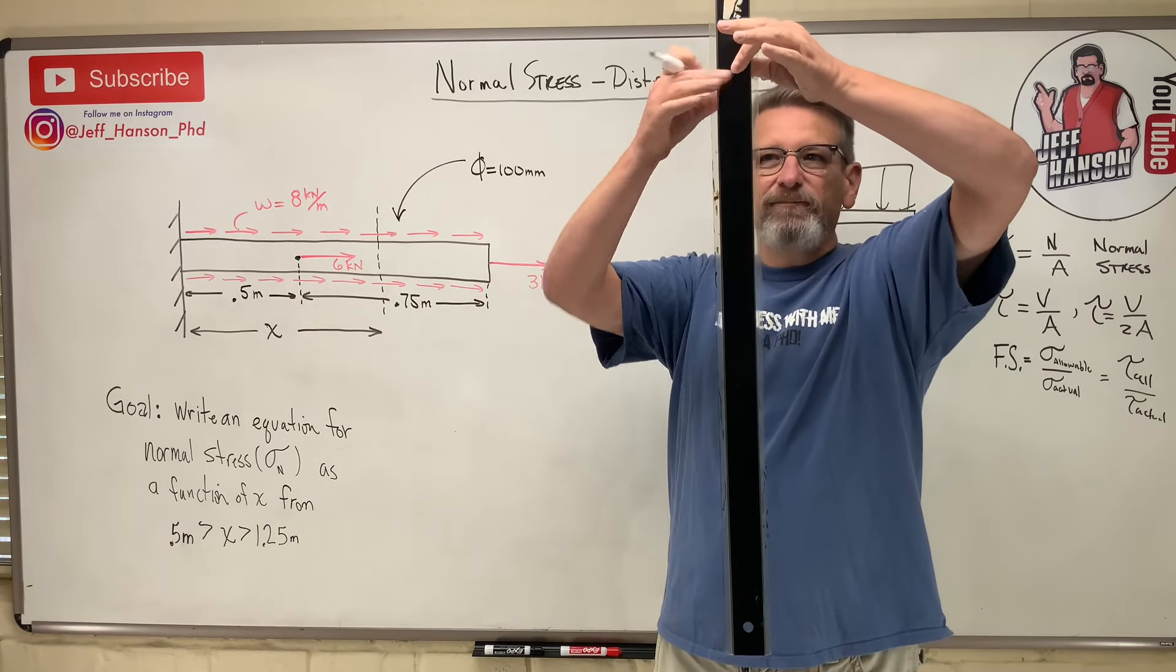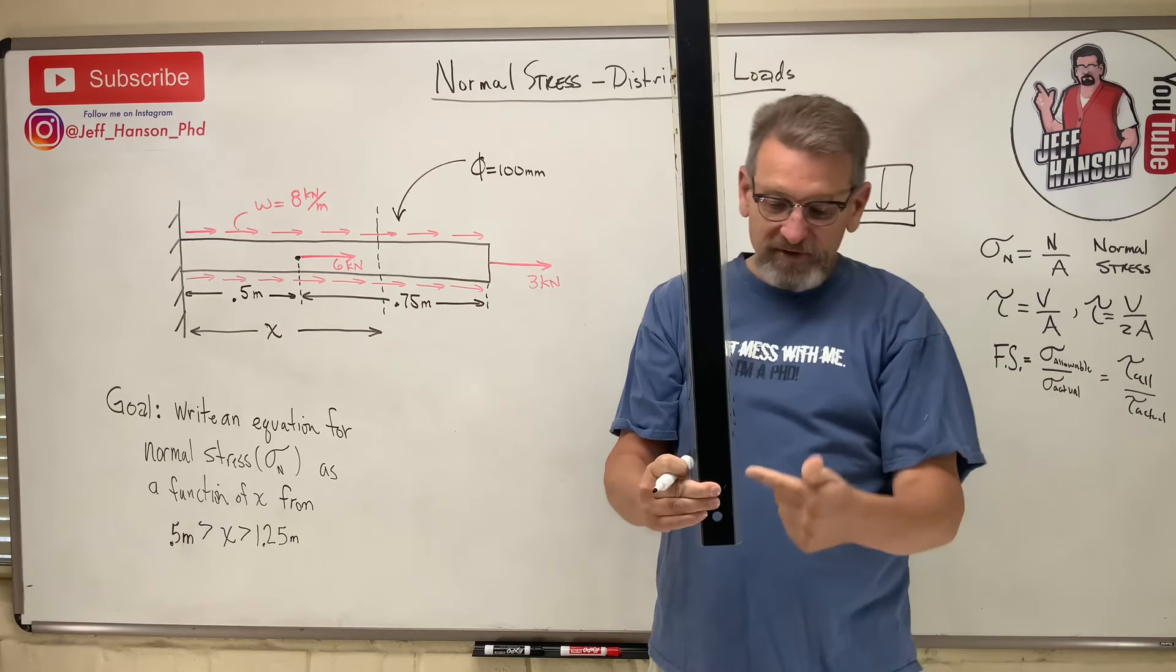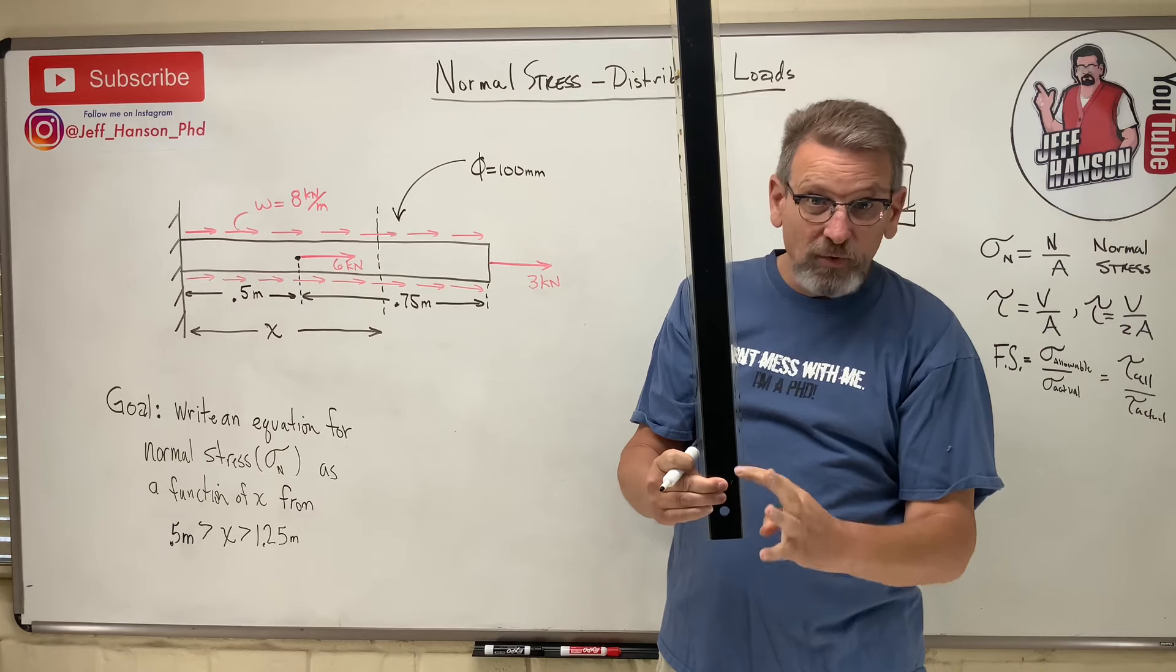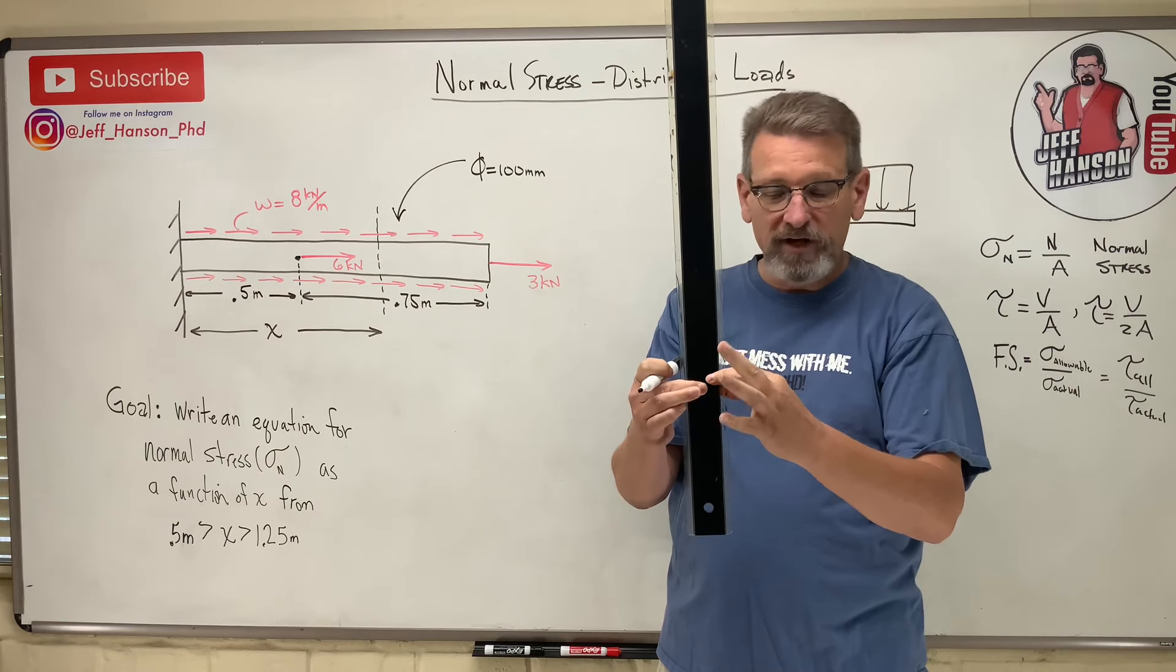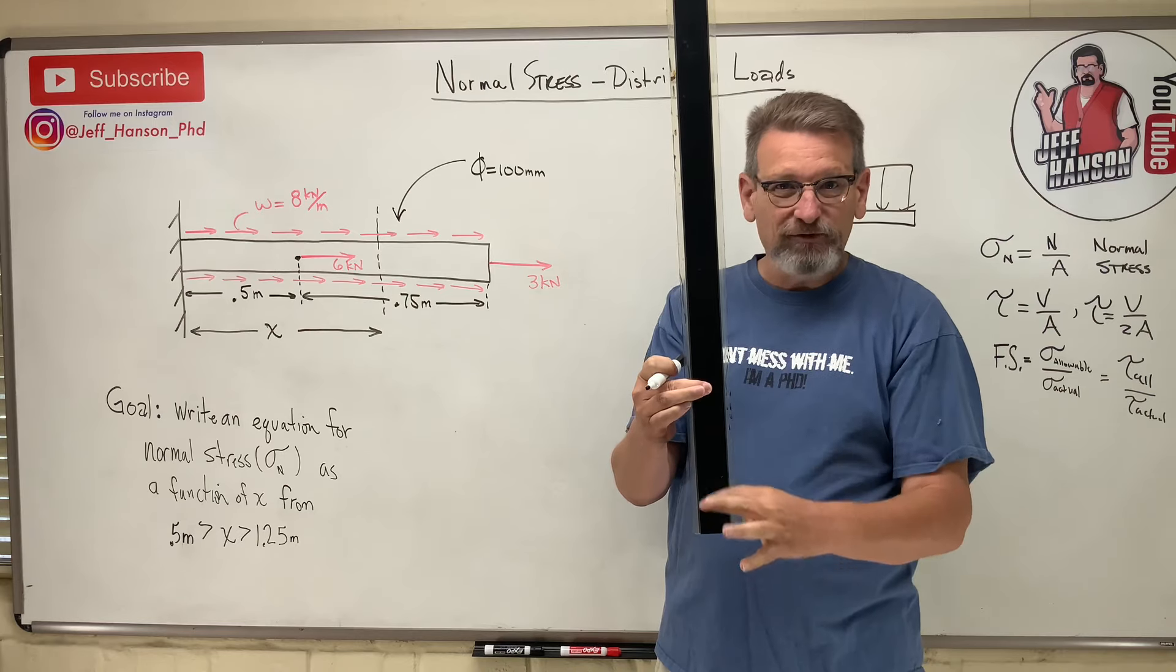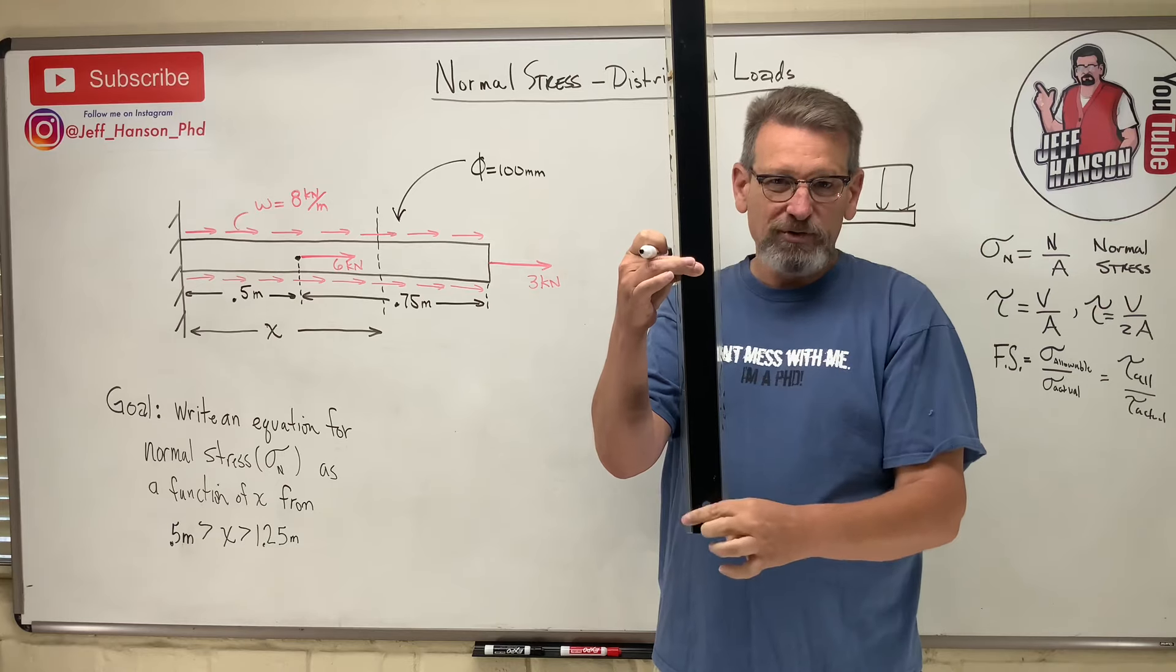This thing has weight, and so if I measure a point right here, if I'm this point right here, I only have this much weight acting on me. If I go this point right here, it's a little farther up, now I have a little more weight that's trying to stretch me. If I look at a point right here, I have even more weight trying to stretch me, right?